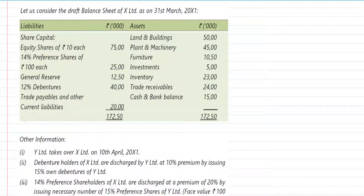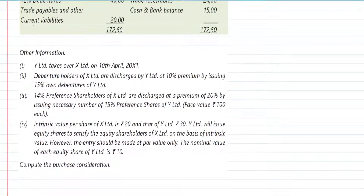Let us consider the draft balance sheet of X Limited as on 31st March 20X1. The share capital includes equity shares with a face value of rupees 10, and 14% preference shares with a face value of rupees 100. Other items include general reserve, debentures, trade payables, other current liabilities, land, buildings, plant and machinery, furniture, investments, inventory, trade receivables, and cash.